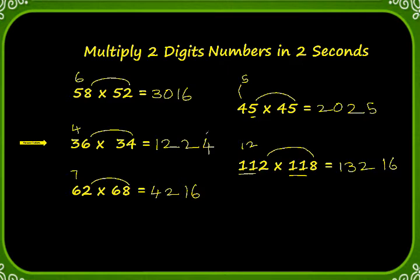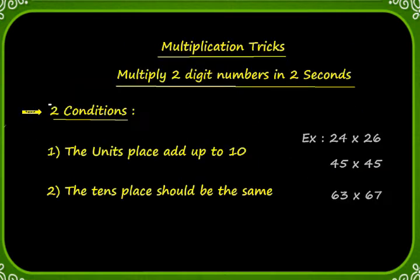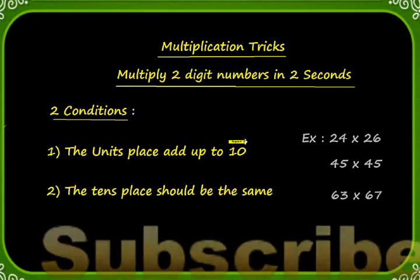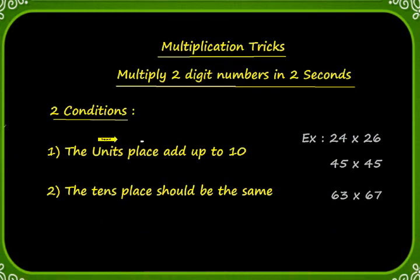Practice many questions like this so that you will get the hang of it. But this shortcut is applicable only when these two conditions are satisfied. Condition number one: the units place should add up to 10. As you can see in the examples, 4 plus 6 is 10, 5 plus 5 is 10, 3 plus 7 is 10. Second condition: the tens place should be the same.